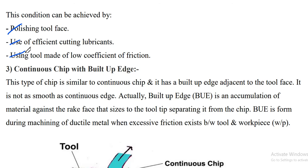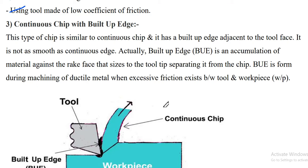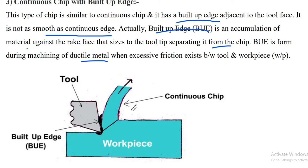The third type is continuous chip with built-up edge (BUE). This type is similar to the continuous chip but has a built-up edge adjacent to the tool face; it is not as smooth as a continuous chip. The built-up edge is an accumulation of material against the tool tip, separating it from the chip. It is formed during machining of ductile metal when excessive friction exists between tool and workpiece.